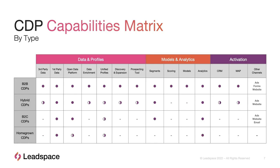These slides will all be available after the webinar. This is another view of that diagram showing where these different capabilities sit, organized by type: data and profile capabilities, model and analytics capabilities, and activation. This is a handy guide for understanding where different solutions fall in the market — because people will just say 'I'm a CDP,' but if you start to look at what they offer, you can place them into these different categories.